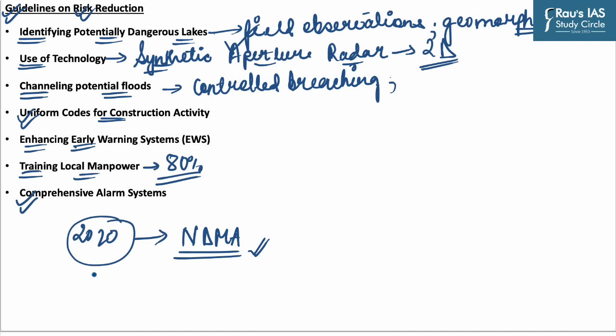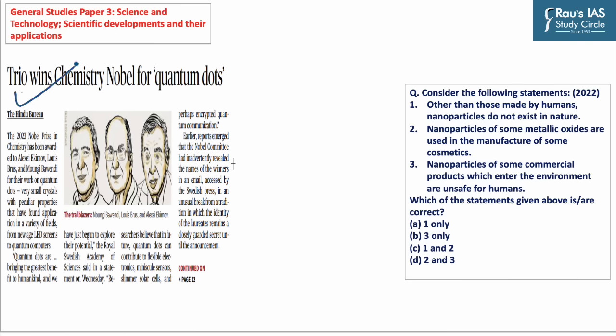With this, we will be concluding the discussion on the third topic. The fourth topic of today's session is important from General Studies Paper 3 perspective on science and technology — scientific developments and their applications. The 2023 Nobel Prize for Chemistry has been awarded to Alexey Ekimov, Louis Brus, and Moungi Bawendi for their work on quantum dots.